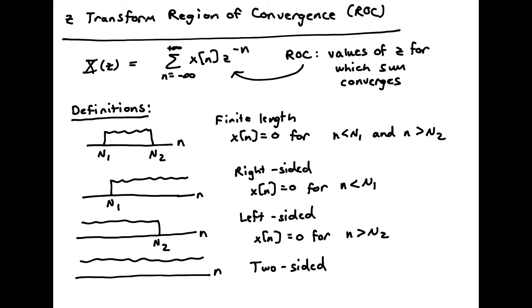Hello, and welcome to a DSP video describing the Z-transform region of convergence. This is the equation for the bilateral Z-transform, and the region of convergence is the values of Z for which this infinite sum converges.